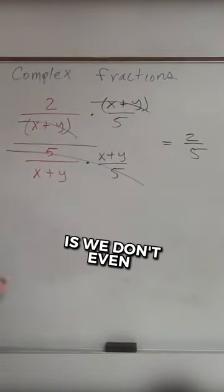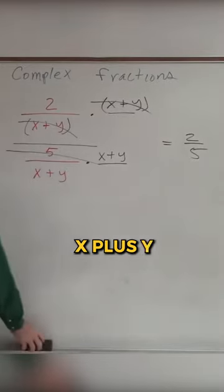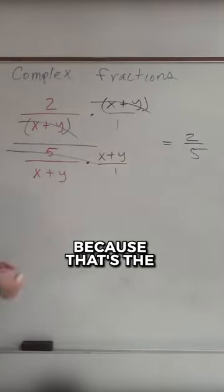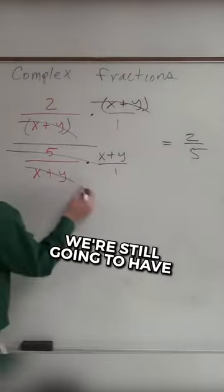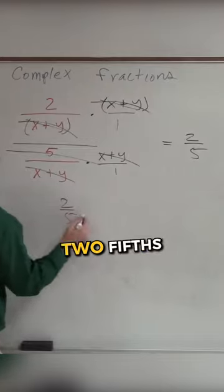Another way we could do this is you don't even need to multiply by the reciprocal. If I just multiply x plus y on both sides, we still know if I multiply x plus y over 1, because that's the LCD of our numerator and denominator, that's going to divide out to 1. And that will still divide out to 1, leaving us with 2 fifths.